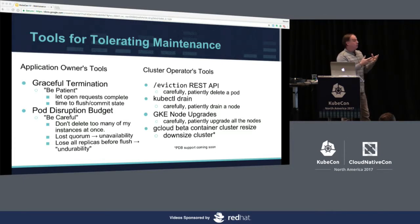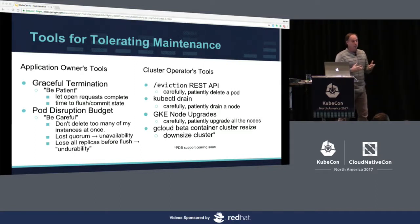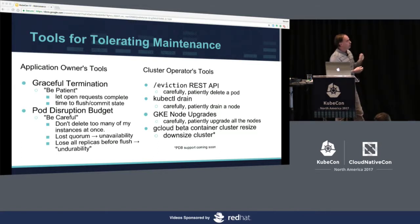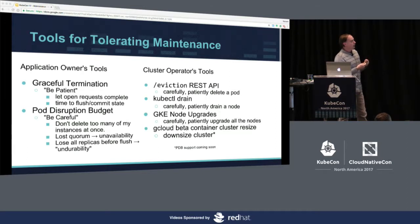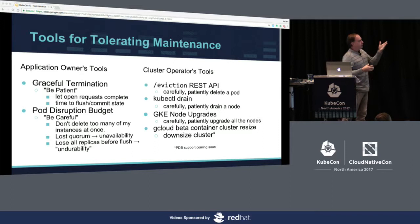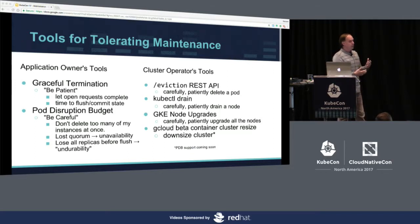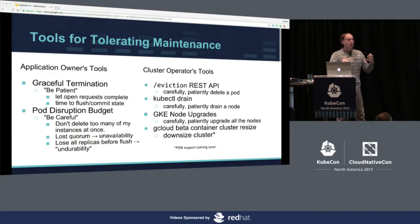If you've decided you want to build maintenance-tolerant applications, Kubernetes offers you a number of different tools. Our underlying philosophy is that there are two different boxes of tools: one for application owners and one for cluster owners. The reason we split roles into two parts is to allow automation — if you have many teams deploying microservices into a single cluster, it's not always practical for the cluster operator to understand all of them. You need a clear contract between cluster operators and application owners. Application owners understand the availability model, quorum, requirements, and how long things take to drain, whereas the cluster operator just needs to understand these things in the abstract.